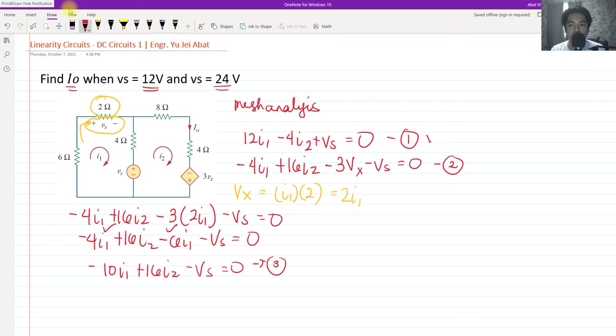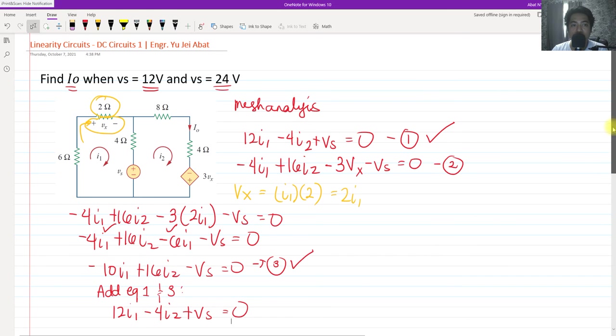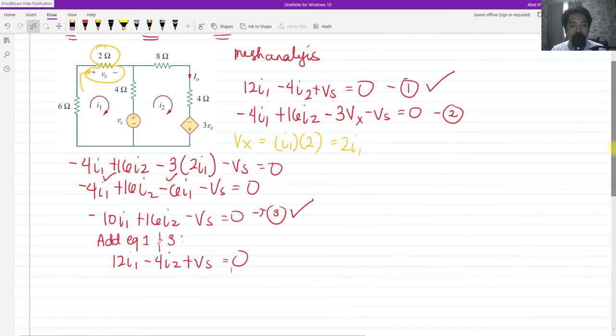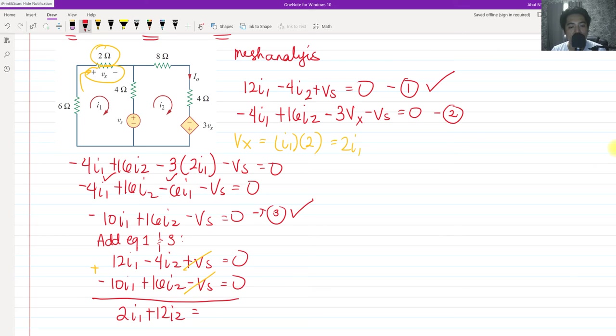If we are going to add equation 1 and equation 3, we have equation 1 is 12 I sub 1 minus 4 I sub 2 plus V sub S equals 0. Adding equation 3, which is negative 10 I sub 1 plus 16 I sub 2 minus V sub S equals 0, this would actually cancel the V sub S. If we add these, they will cancel. So you are left with 2 I sub 1 plus 12 I sub 2 equals 0.